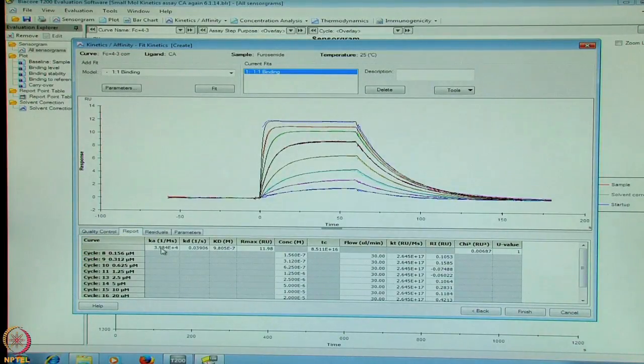The report shows on rate, off rate, affinity constant or binding constant, flow rate, differences in the refractive index of the sample and the running buffer, chi-square below 1 and U-value below 25. So this data shows the interaction of furosemide with carbonic anhydrase is 9.8 into 10 to the power of minus 7 molar. With this, we go to the next tab and analyze the data.